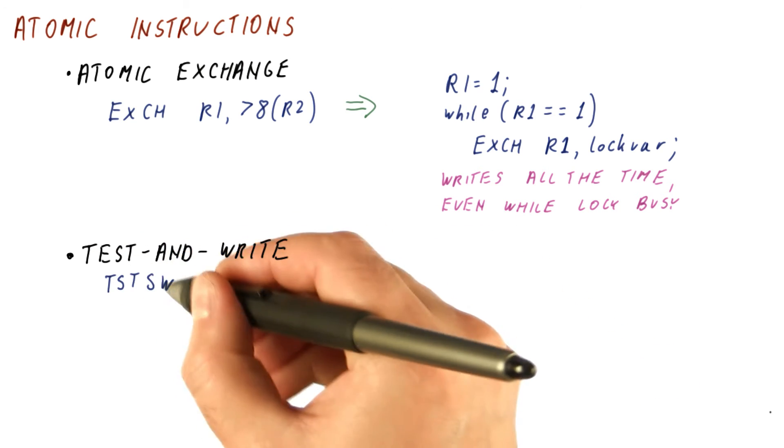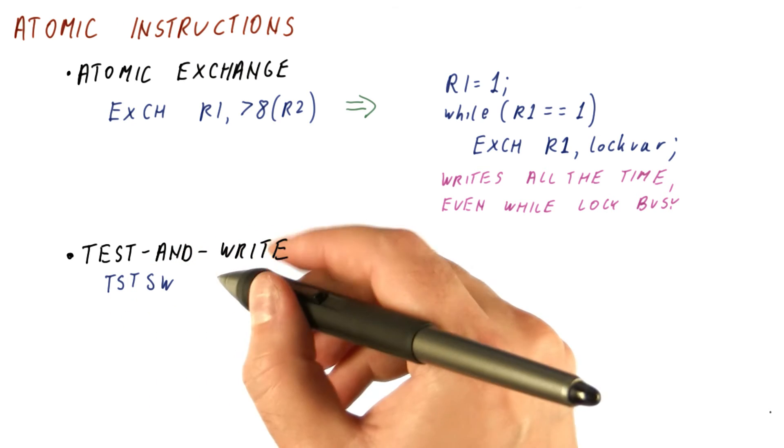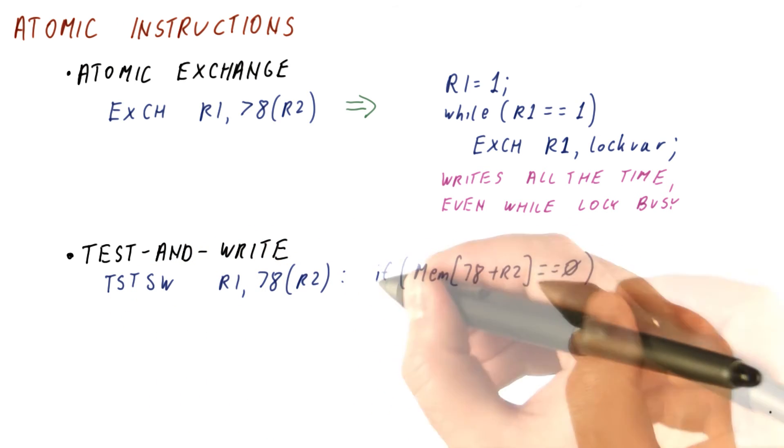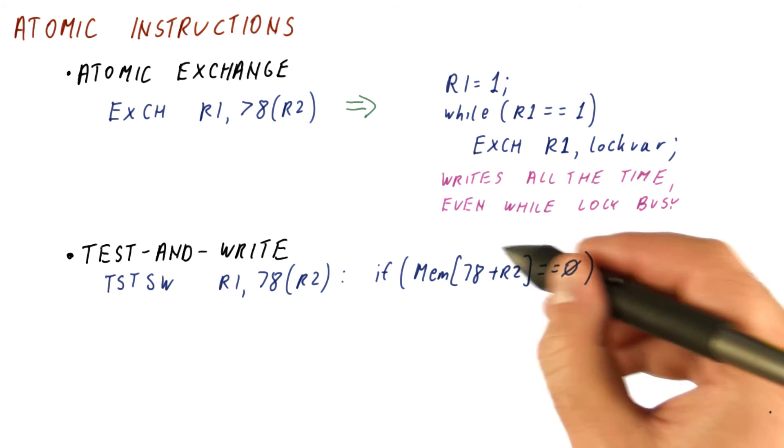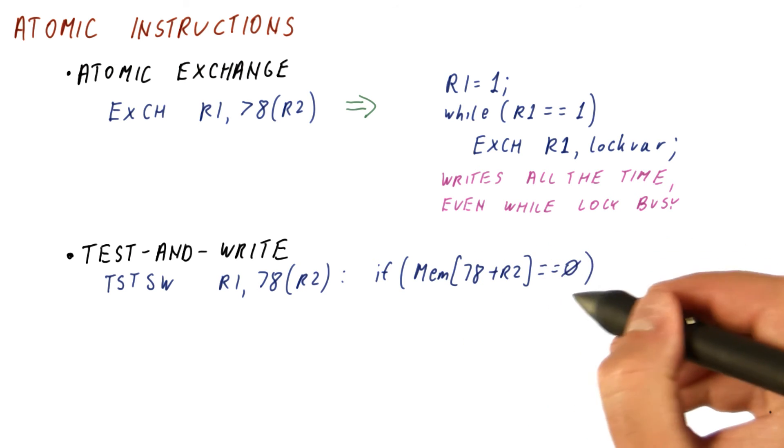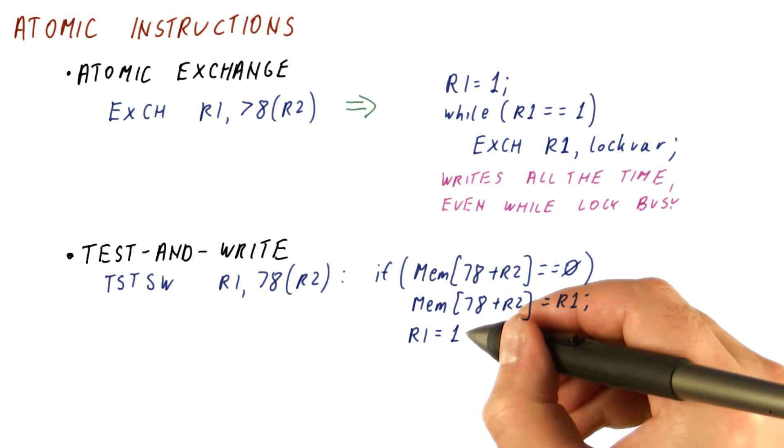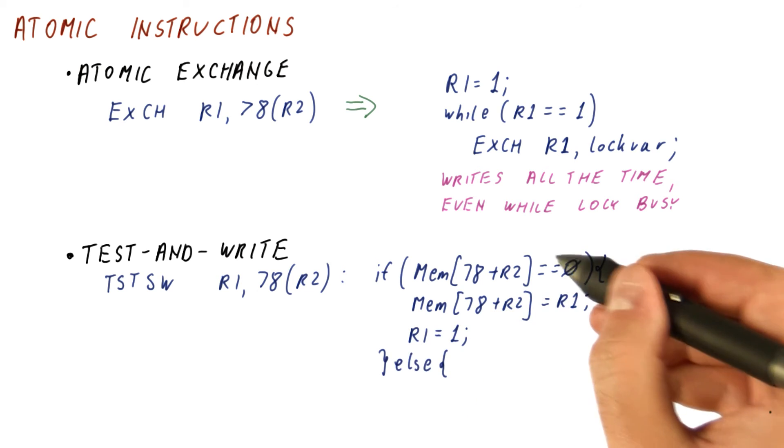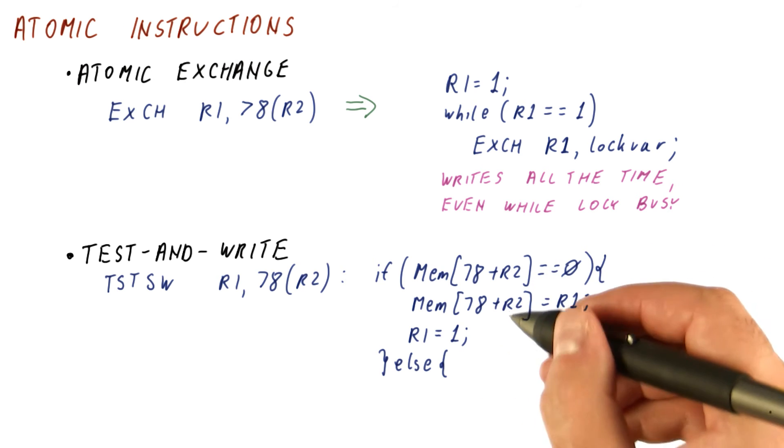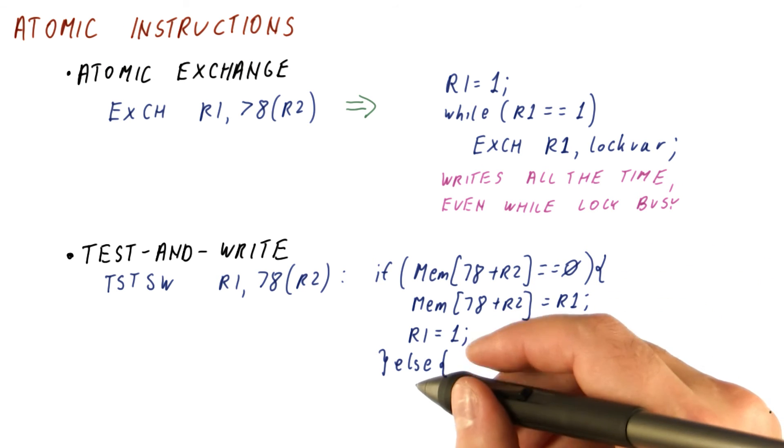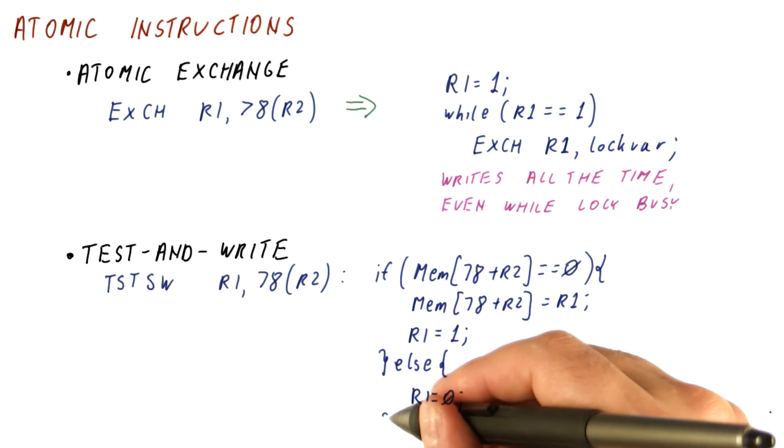So let's say we have some sort of a test and store instruction, which behaves like this. We read the memory location that we are addressing. And if that location is 0, then we store R1 into it. And in that case, R1 becomes 1. But if the location wasn't 0, then we don't store anything to that location. We just return a 0.